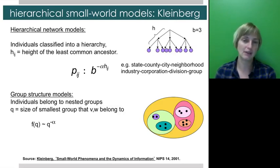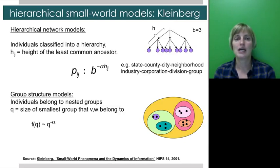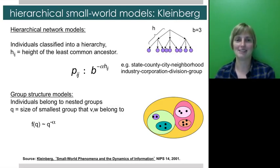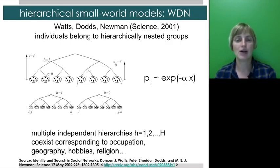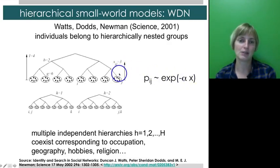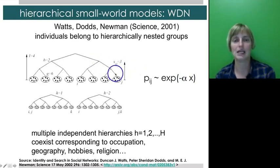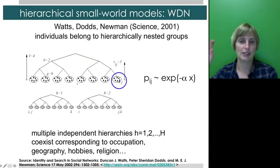Two different ways of representing nested group structure allow you to represent not only geography — neighborhoods, parts of cities, parts of counties — but also other things such as individuals taking the same class at a university, who have the same major, who are in the same school within the university, who are part of the same university, et cetera. Concurrently, Watts, Dodds, and Newman proposed another hierarchical model, very similar, saying the probability that i and j know each other is proportional to e to the minus alpha x, where x is the number of steps up in the hierarchy you have to go to join two individuals.